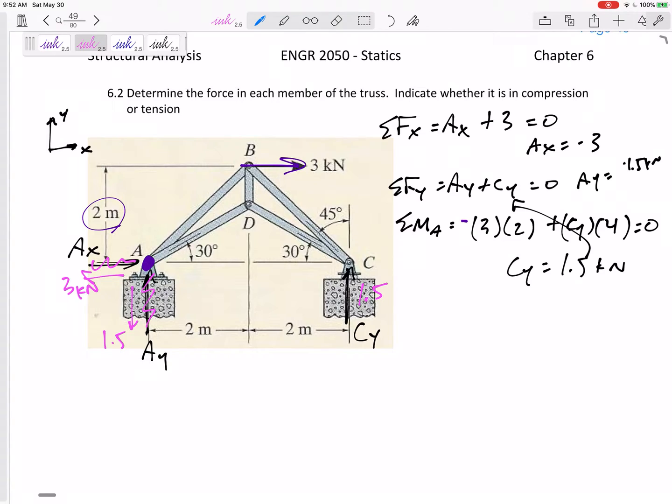Alright, so sometimes you don't have to. But in general, it's a good rule of thumb to look at the whole free body diagram and solve for what's happening at those reaction supports. So how is it being supported? Is there a pin at A, a roller at C?